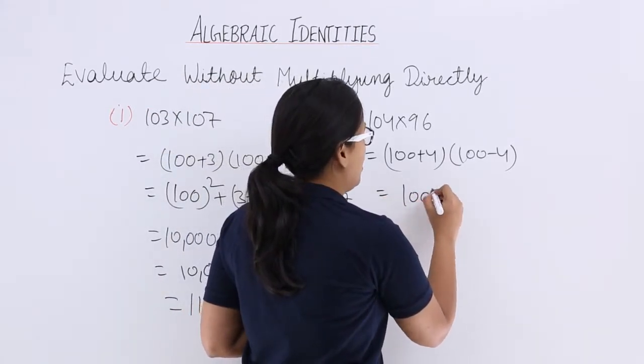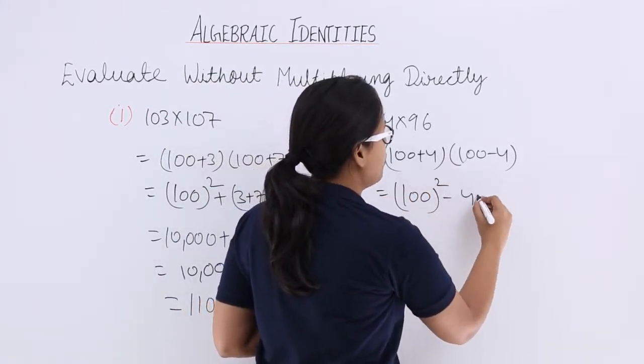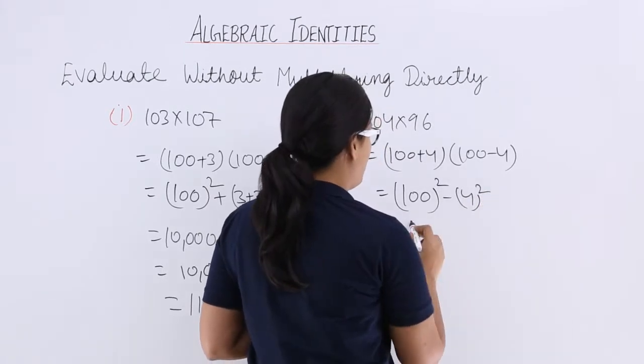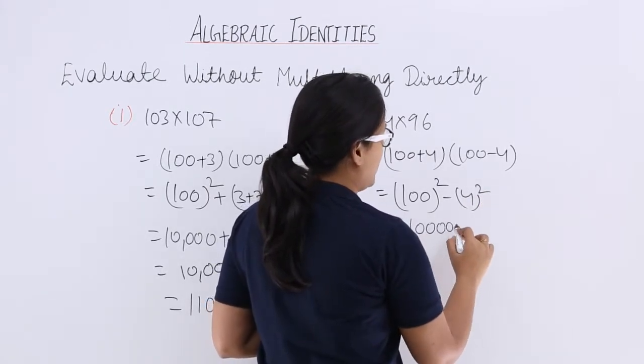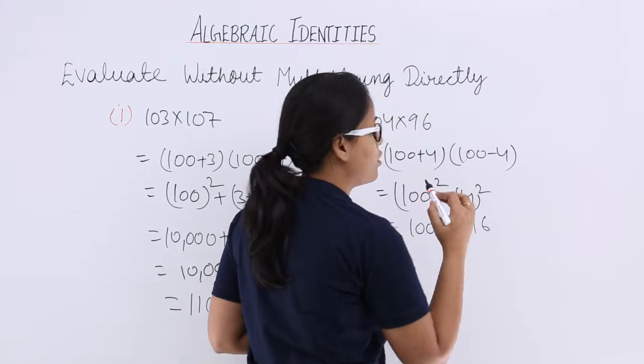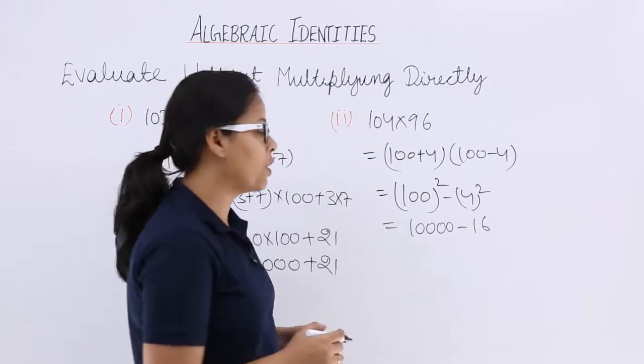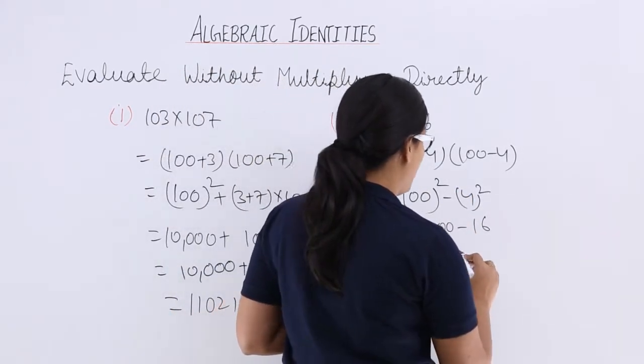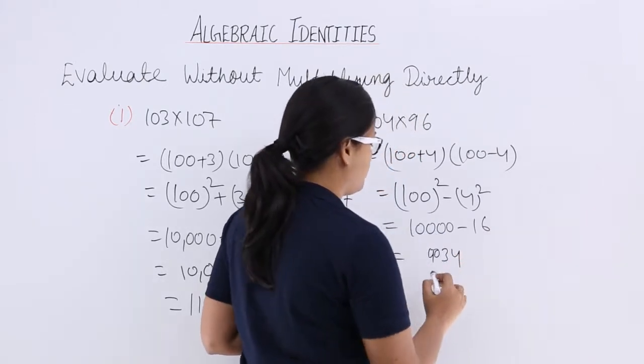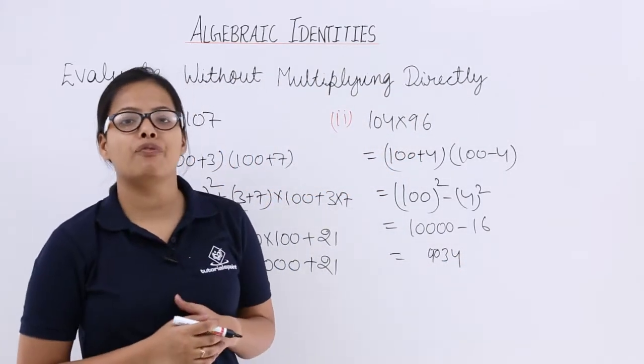So this will be 100² minus 4². So you will be getting this and after solving this, the final result will be 9,984.